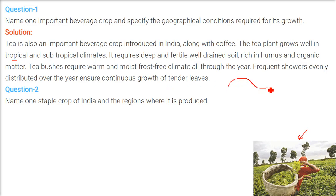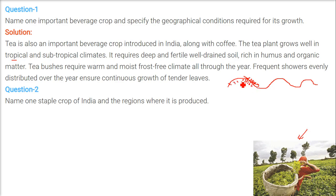If you have an undulated terrain, then you can grow the tea plant. It doesn't require water to stagnate — the water will come and go. In this type of terrain we have deep soil, and we need well-drained soil. In this area we generally find humus and organic matter.